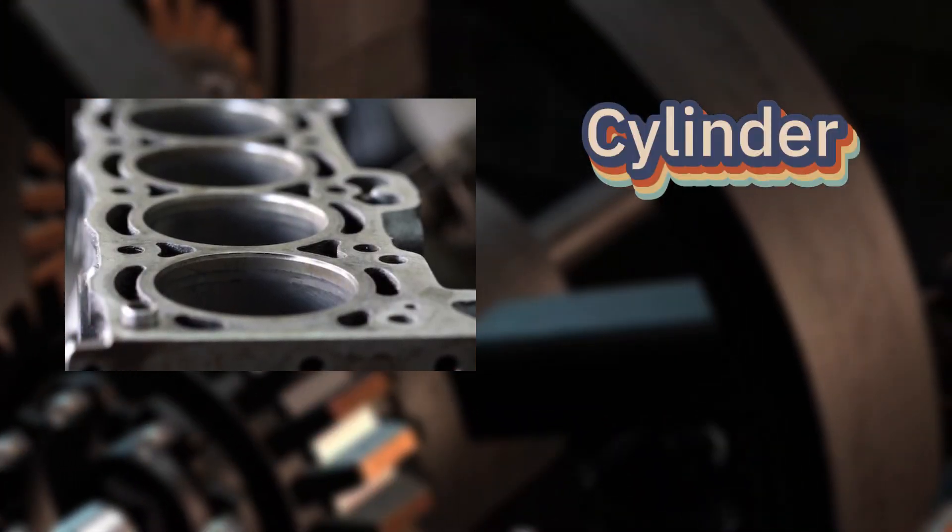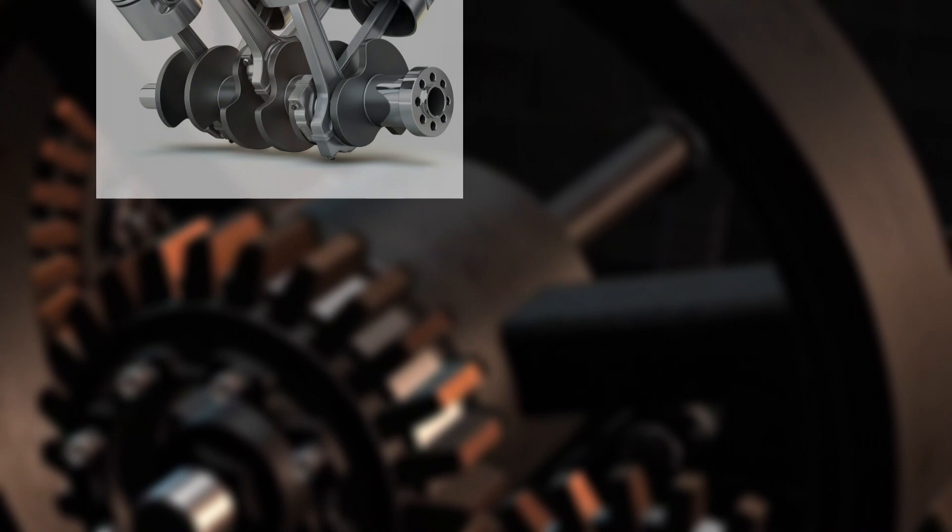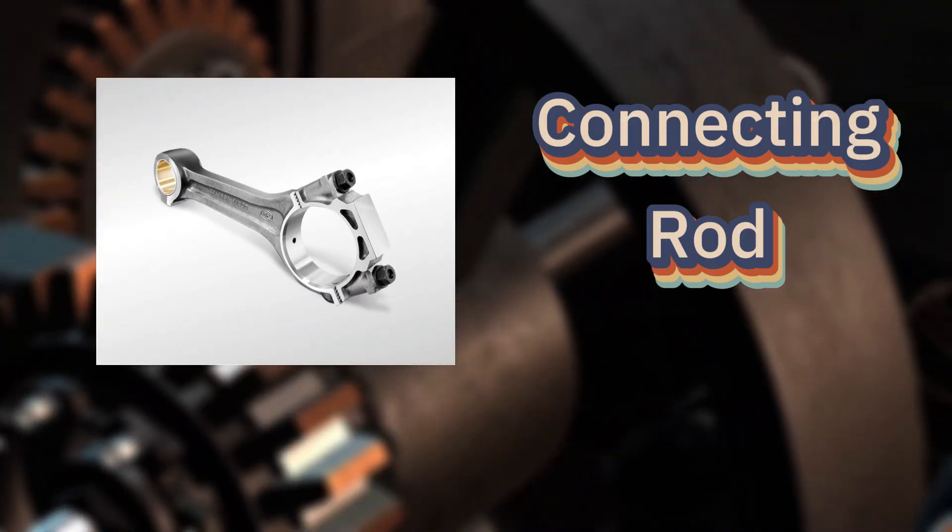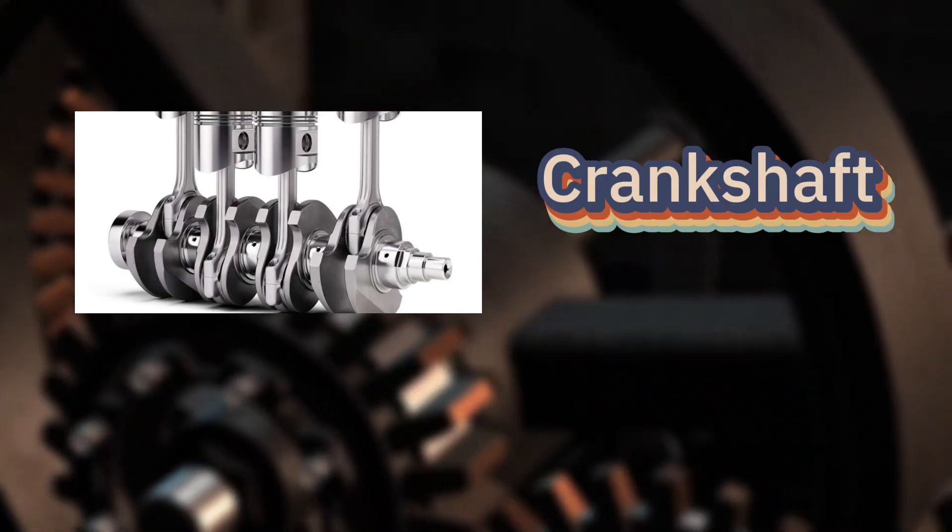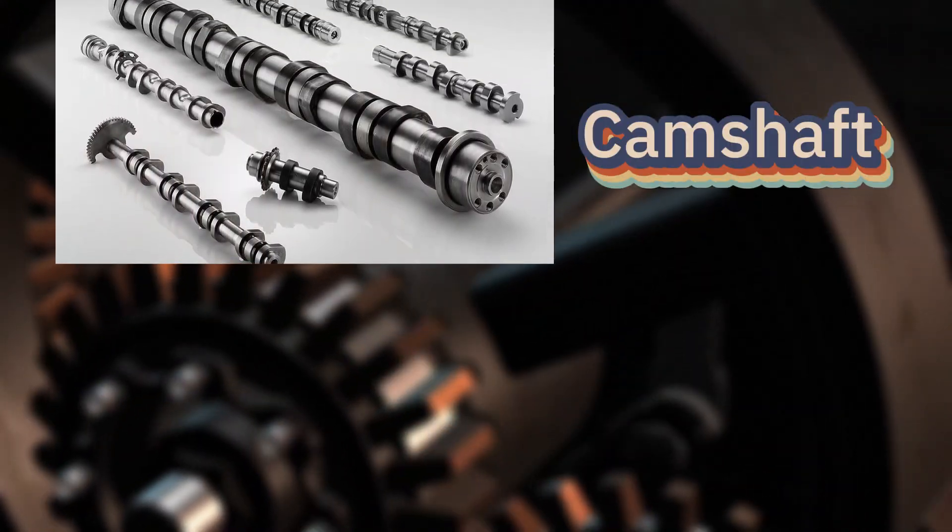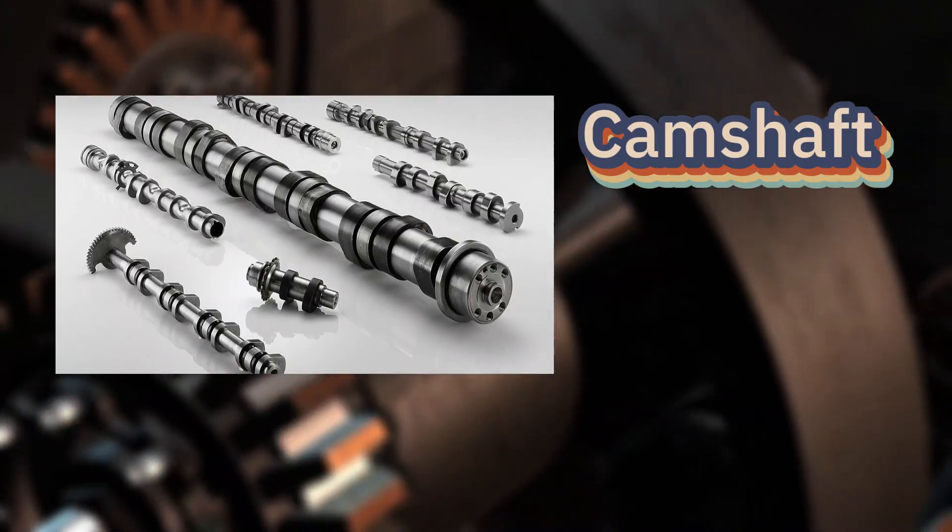Cylinder, the chamber where all the action takes place. Piston, a cylindrical piece that moves up and down inside the cylinder. Connecting rod, connects the piston to the crankshaft. Crankshaft, converts up and down motion into rotary motion to move your wheels. Camshaft, operates the intake and exhaust valves.